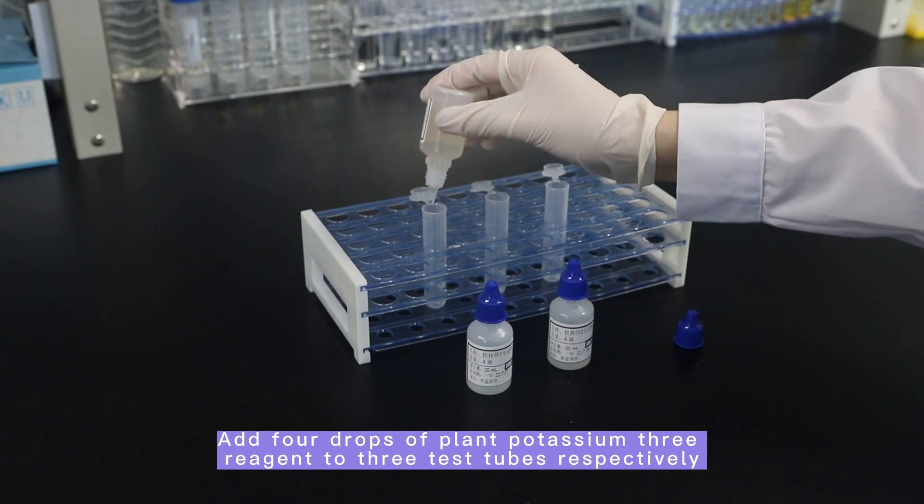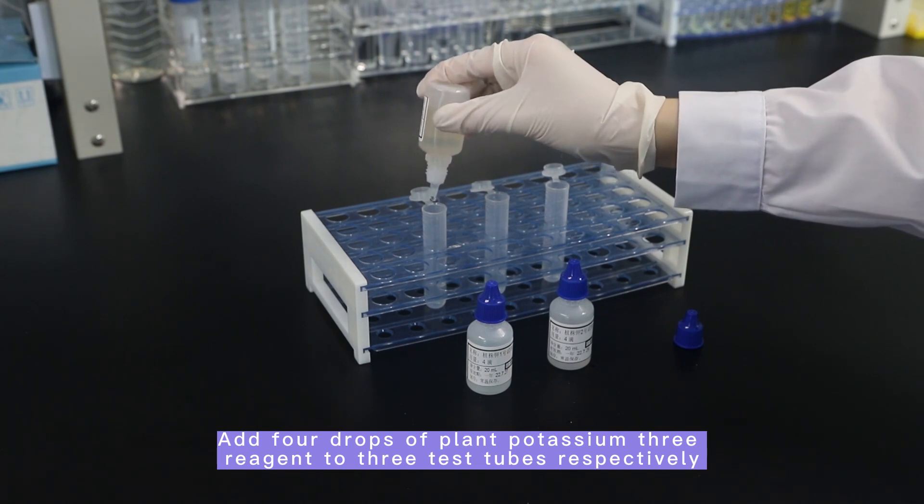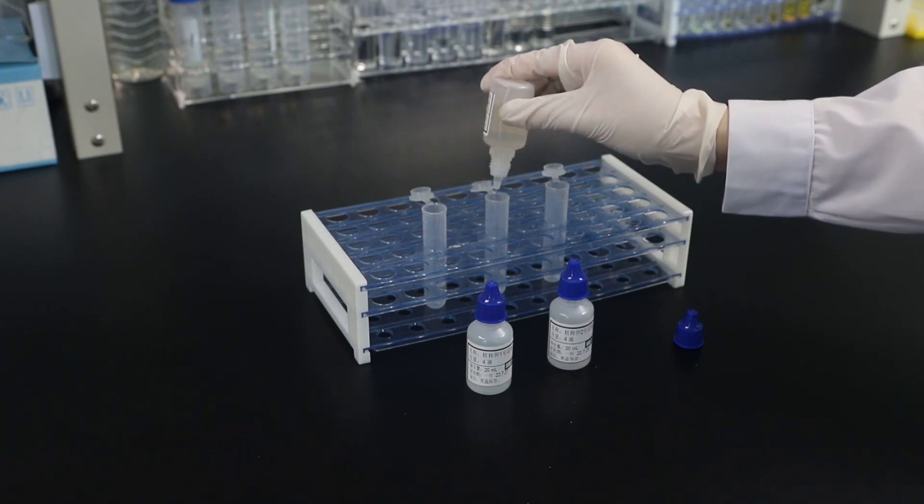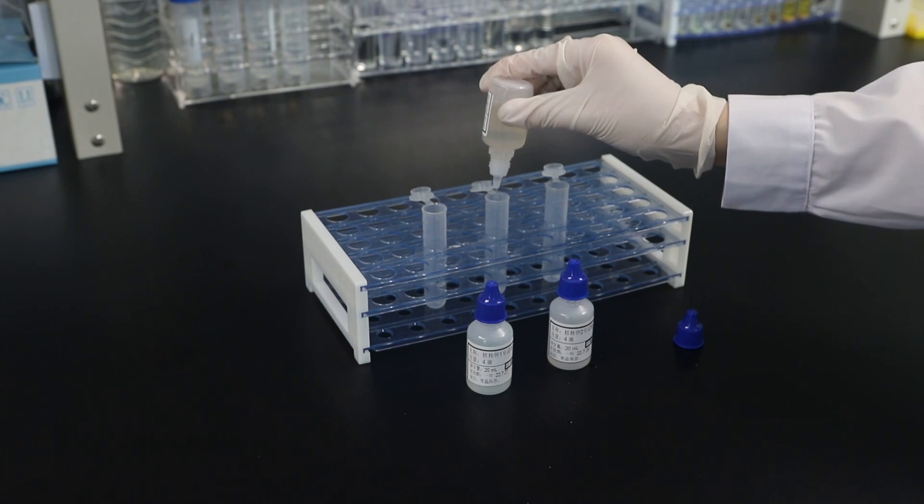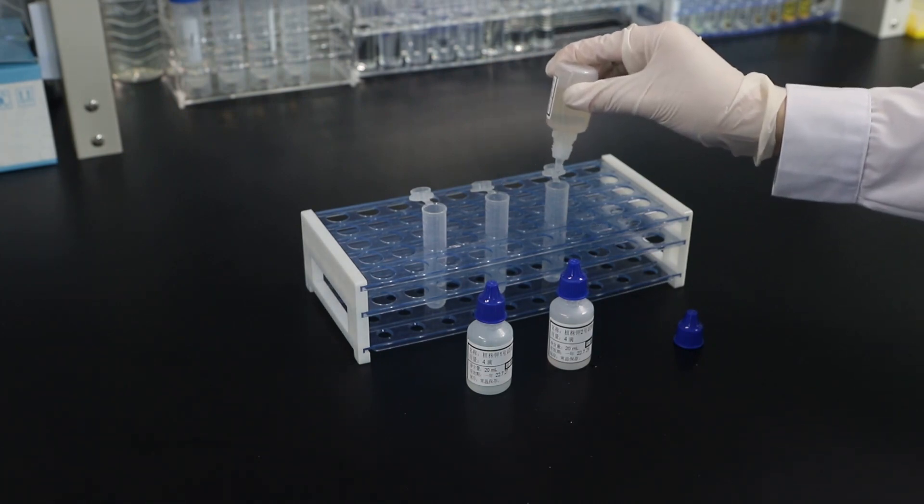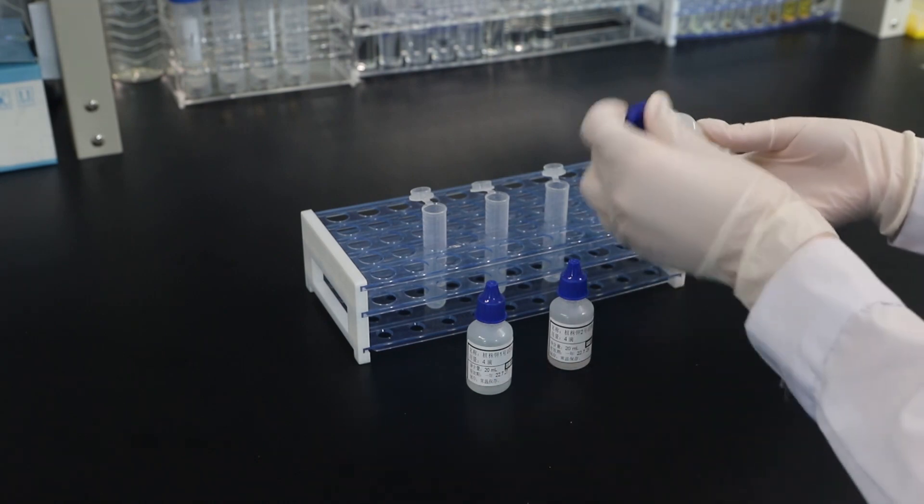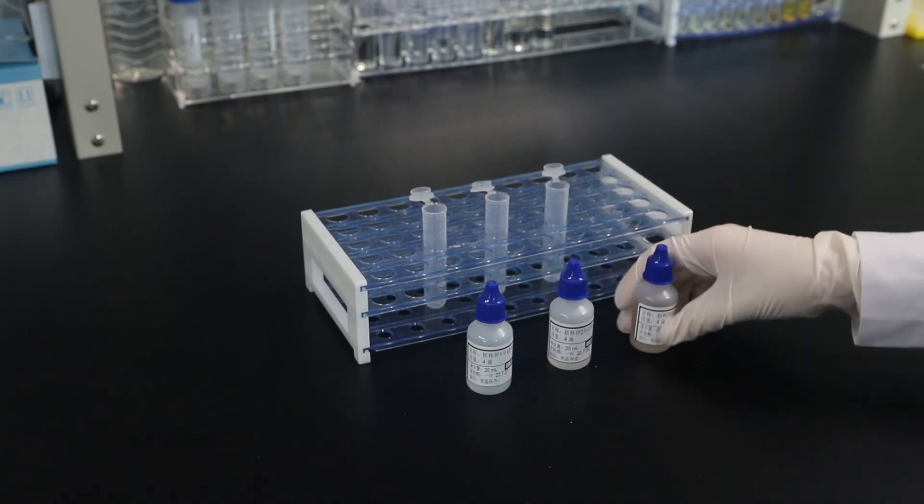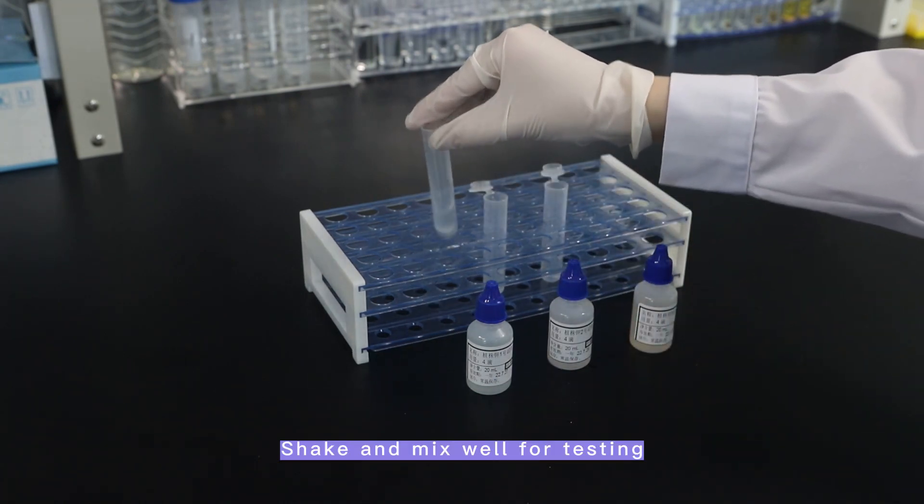Add four drops of plant potassium three reagent to three test tubes respectively. Shake and mix well for testing.